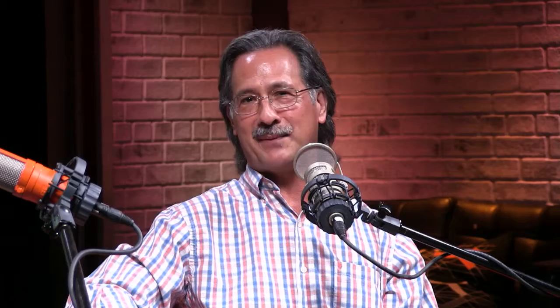B: it binds to tyrosine kinase receptors and causes their dimerization. These are receptors in cells that become dimerized to elicit a second messenger signal transduction mechanism. Insulin, for example, is the classic mediator of that process. But that's not the correct answer.